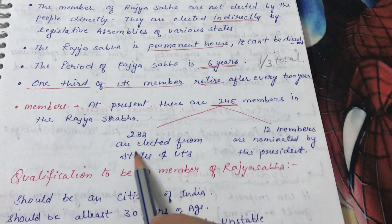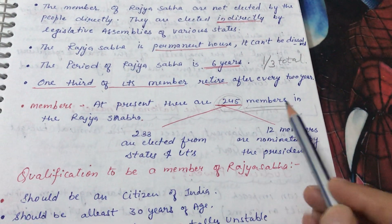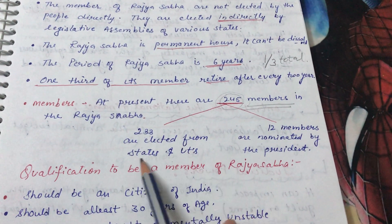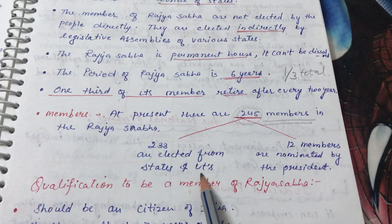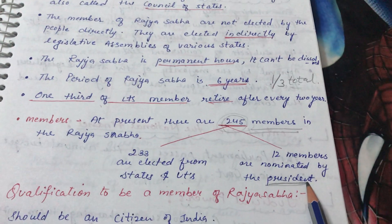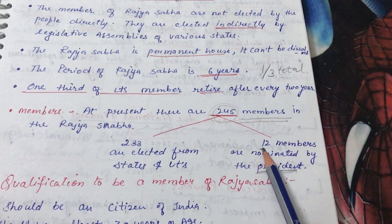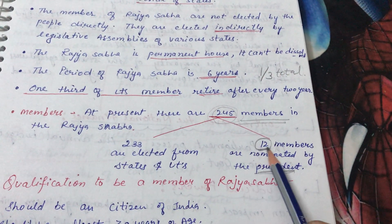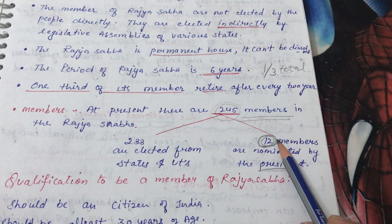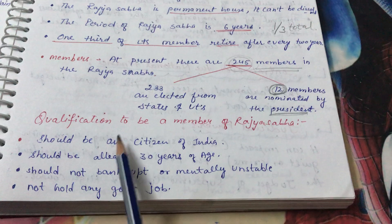At present there are 245 members in the Rajya Sabha. Of these, 233 are elected from the states and Union Territories, and 12 members are nominated directly by the President. These 12 nominated members belong to different categories like science, art, and architecture — they are the most distinguished people in the country.